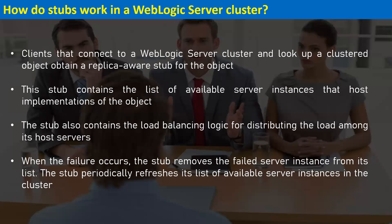The stub contains a list of available server instances that host the implementation of the object. It also contains the load balancing logic for distributing the load among host servers. When requests come to the cluster, the stub has information about all running managed servers and uses load balancing algorithms — round-robin, weight-based, or random — to distribute requests between different managed servers.